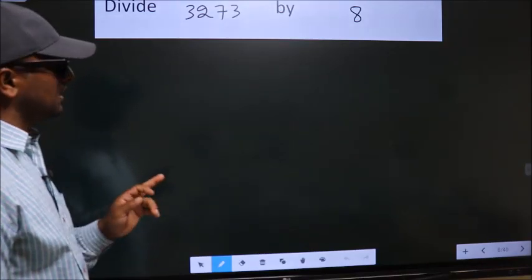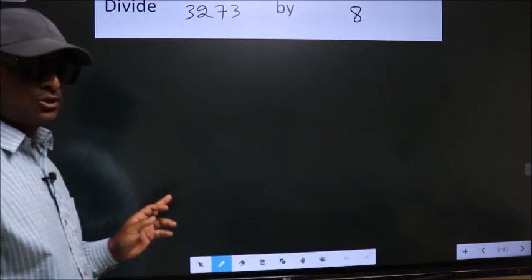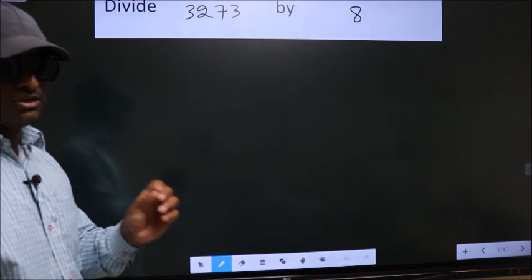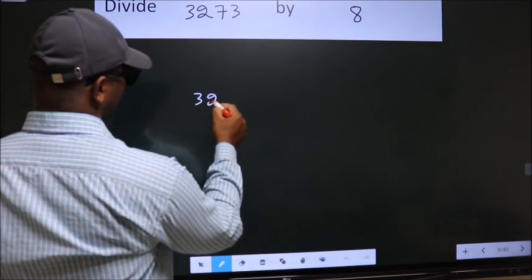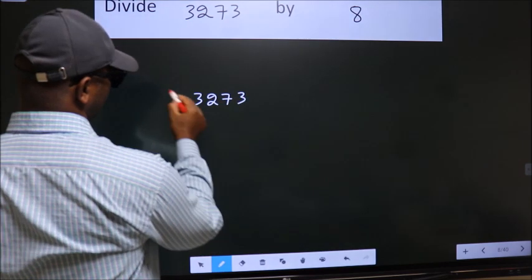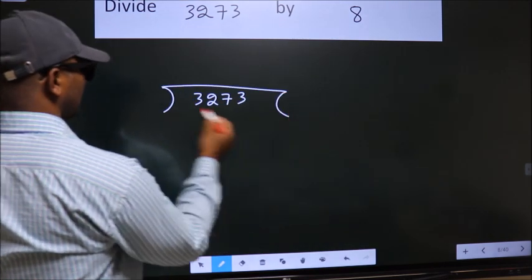Divide 3273 by 8. To do this division, we should frame it in this way. 3273 here, 8 here.